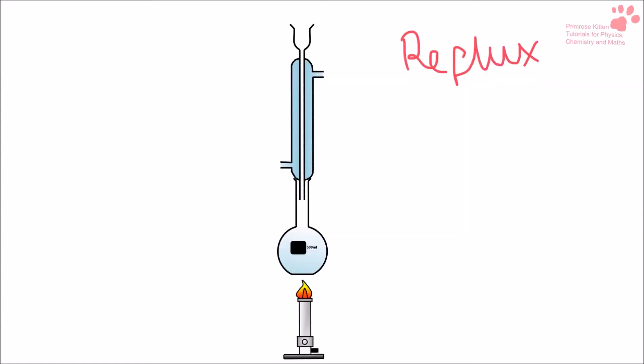In reflux, we don't separate out the products of a reaction — we want them to react over and over again. After the mixture is heated up and turns into a gas, it goes up into the condenser, condenses, and then drops back down to be heated and reacted further. So this is the key difference: distillation removes the products, while reflux lets the products react even further.